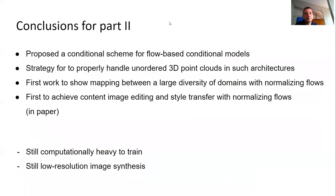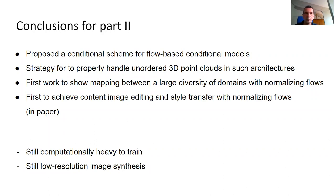To summarize part two: we introduced a conditional scheme for flow-based models that enables modeling conditional distributions rather than just the data distribution alone. We showed a strategy for handling unordered 3D point clouds in such architectures, and we believe this is the first work showing mappings between a large diversity of domains with normalizing flows. The main disadvantage is it's heavy to train — storing all flows across layers — so in practice we only managed 64-square resolution, not as impressive as, say, StyleGAN. Hopefully future more efficient schemes will be proposed.